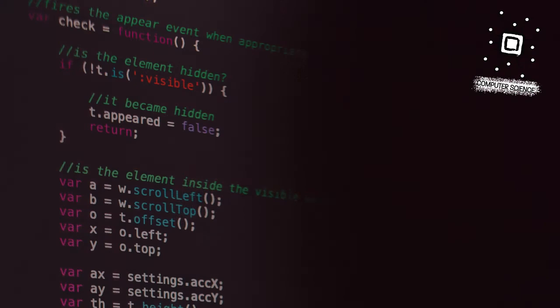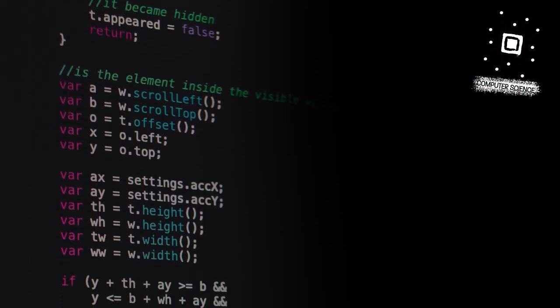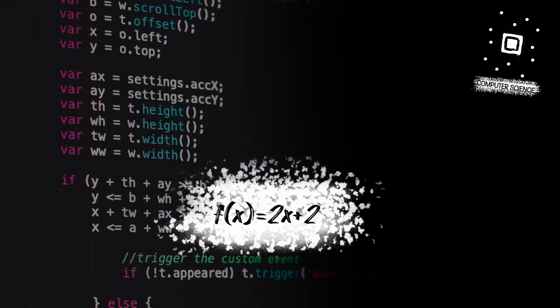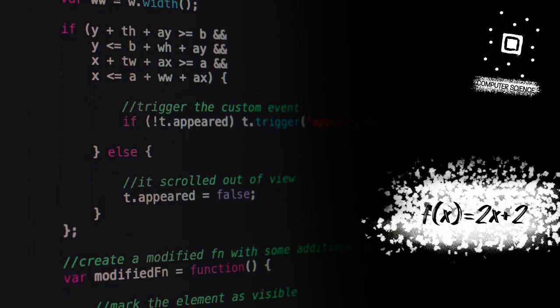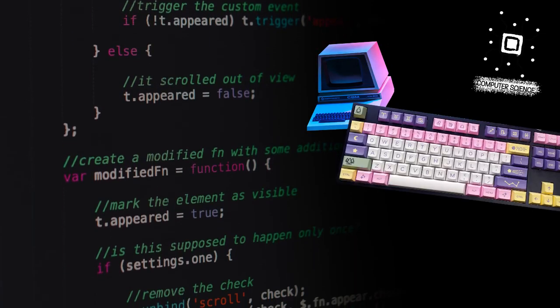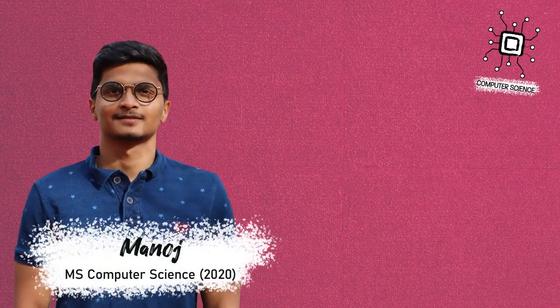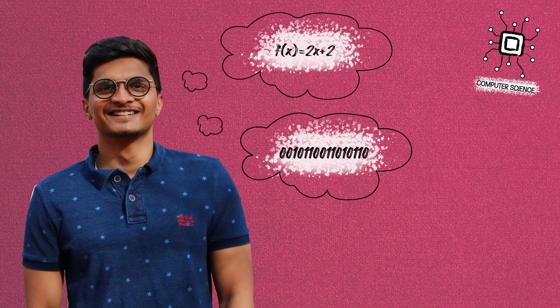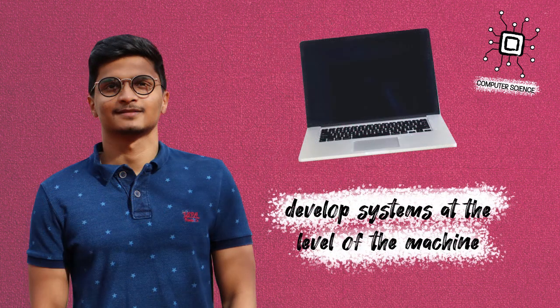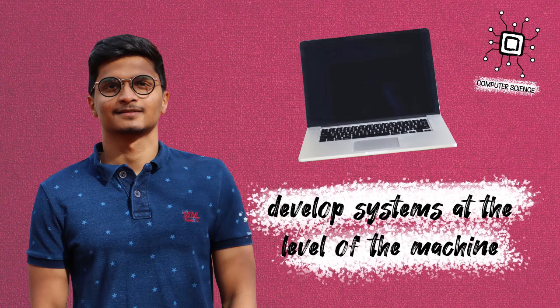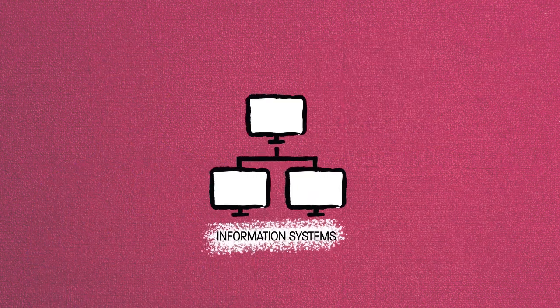The computer science approach is very much based on mathematics. It deals more with interactions with physical computer systems. A computer scientist would need to have a very strong understanding of mathematics and programming. The systems that they develop are at the level of the machine.